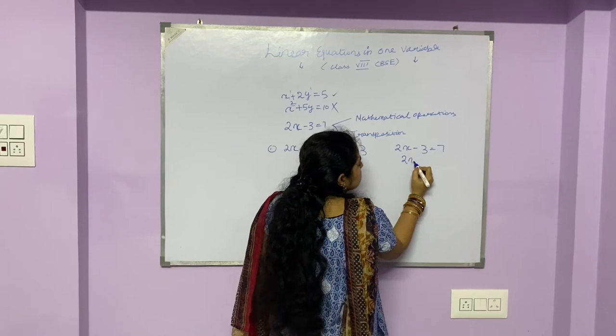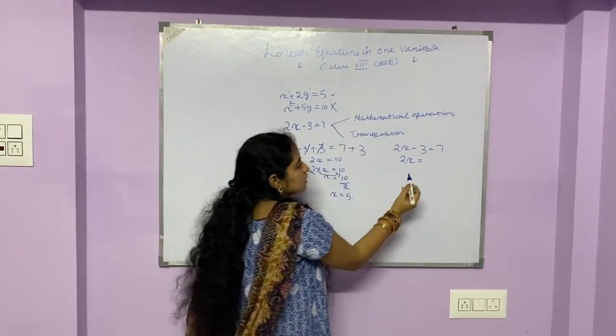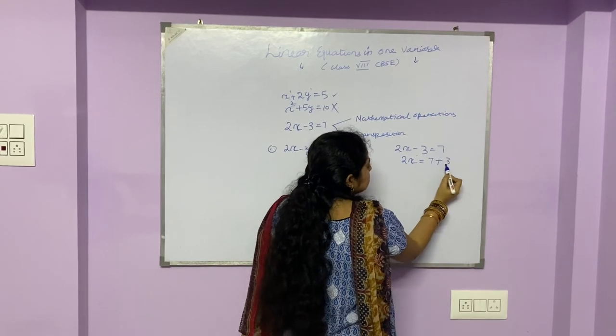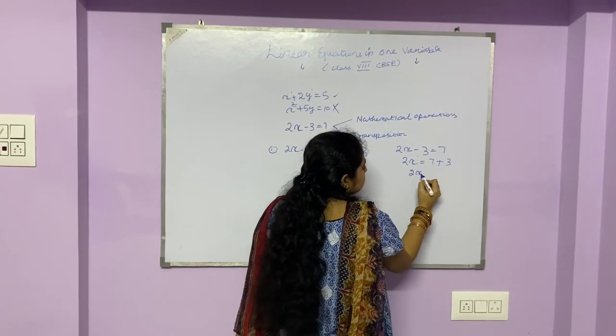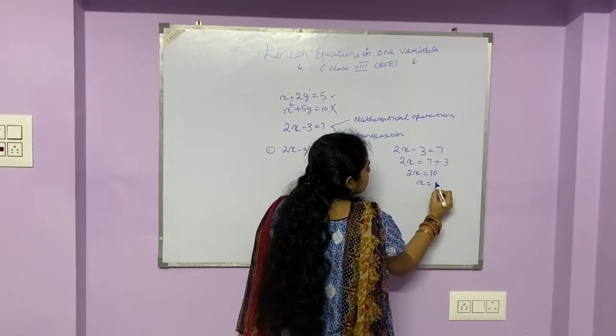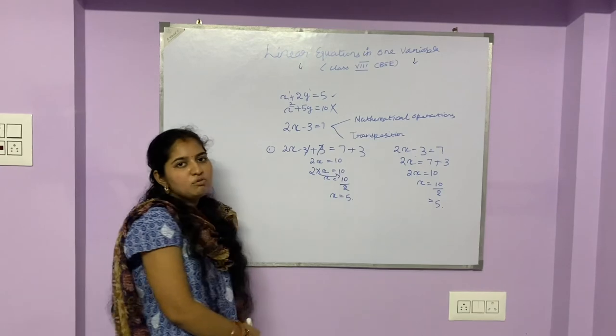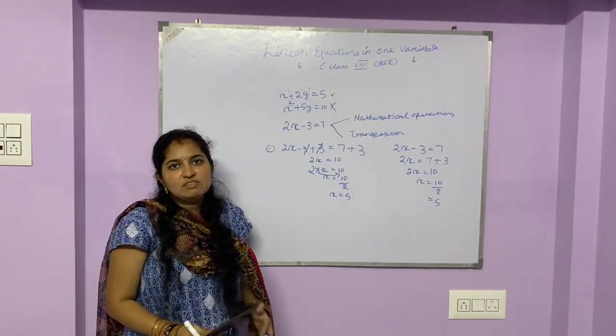Here, we have 2x. I am going to transpose this minus 3 to my right-hand side, so this becomes 7 plus 3. And hence, this would be 2x is equal to 10. And similarly, my value of x is going to be 10 by 2, that is equal to 5. This is how we go about solving a basic linear equation with one variable.